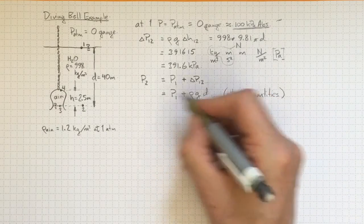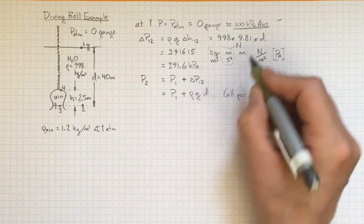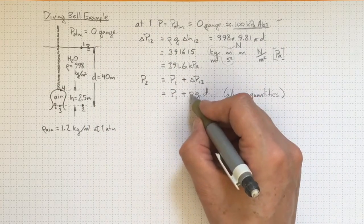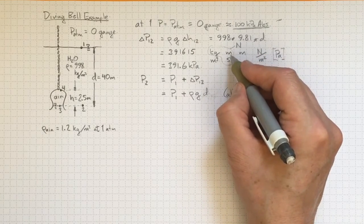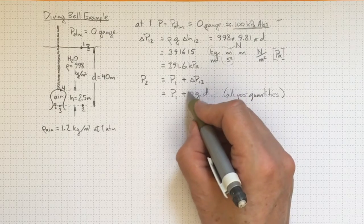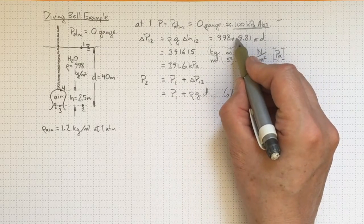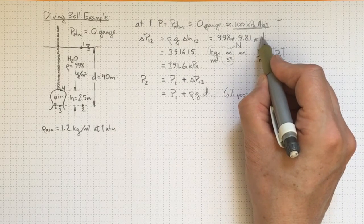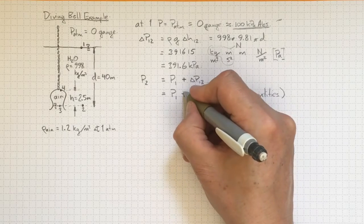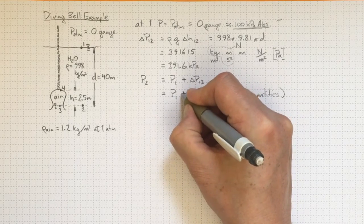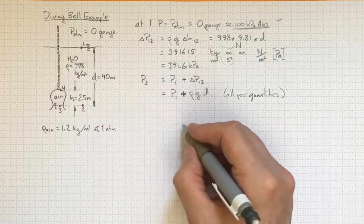By saying that d is simply a positive 40 meters, and g is 9.81, and density is 998 kilograms per meter cubed, then we get the magnitude of this quantity, and without worrying about whether gravity is acting up or down, or whether the change in elevation is up or down, we wind up with the magnitude, and we're very careful to make sure that we get this sign here right to match up with the physical configuration.